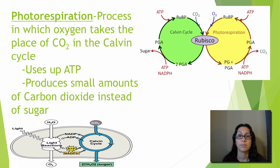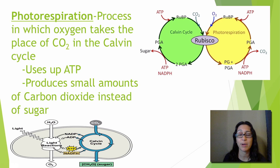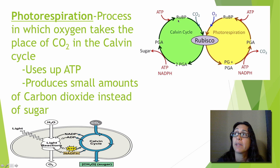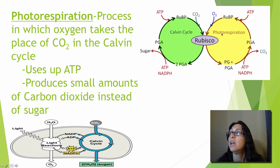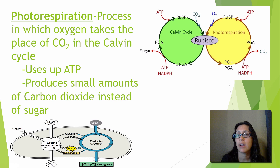Photorespiration involves the Calvin cycle — it basically is the Calvin cycle, except the Calvin cycle has been hijacked by oxygen instead of carbon dioxide. In the regular Calvin cycle, RuBP and carbon dioxide come together via Rubisco, producing PGA, then sugar, and the cycle repeats. With photorespiration, instead of incorporating carbon dioxide, it incorporates oxygen instead.